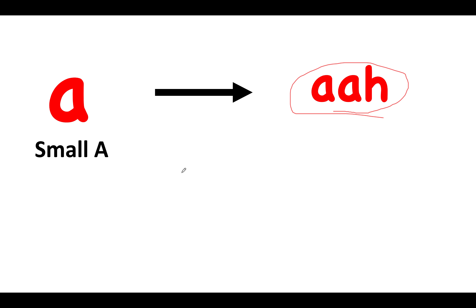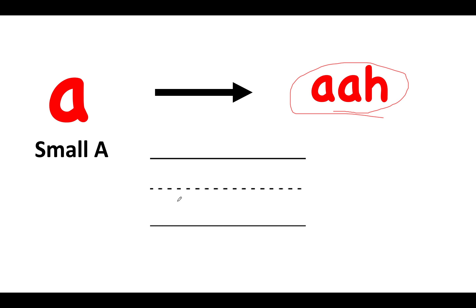So now we will try and trace the small letter A. We will trace the small letter A like this with your pen. Please trace with me. Can you trace with me? Let us try again. Like this. Trace the small letter A. And it makes the A sound.